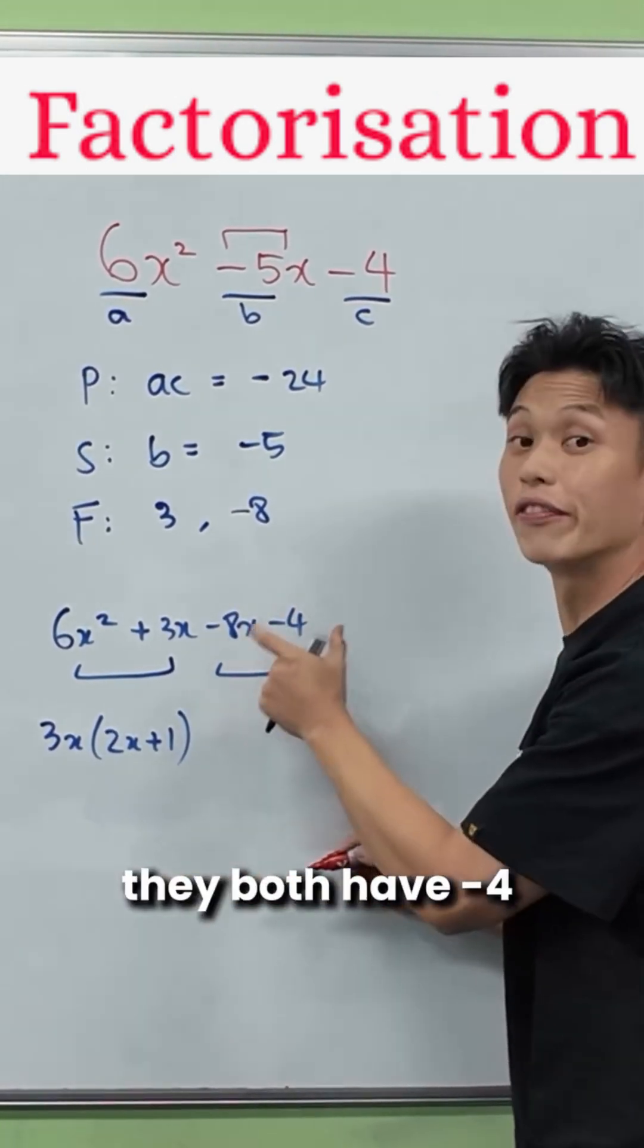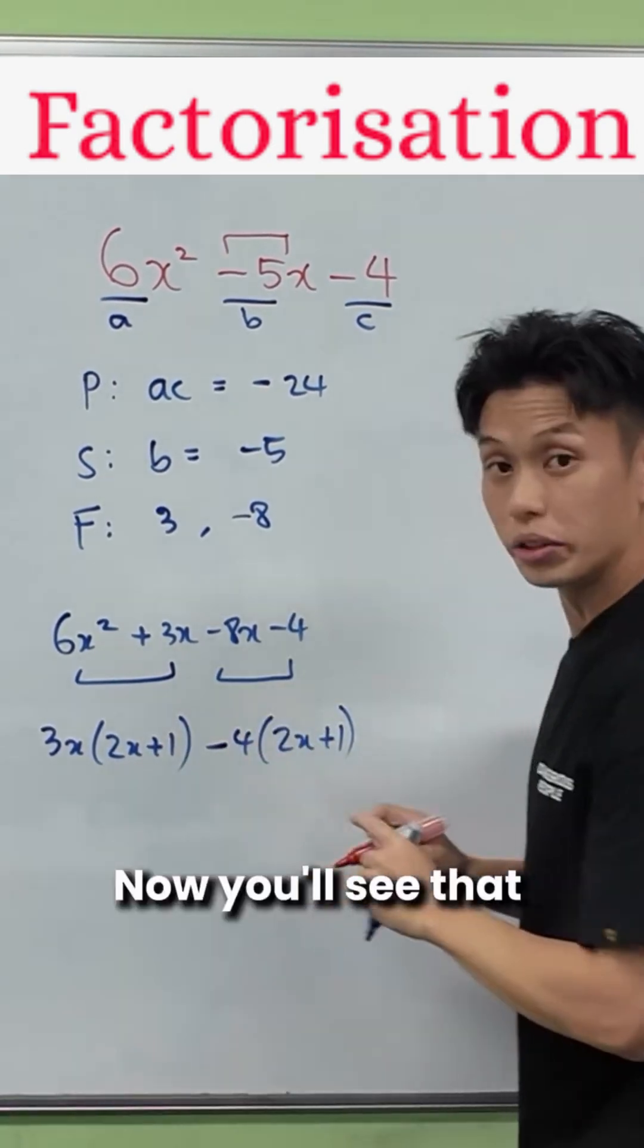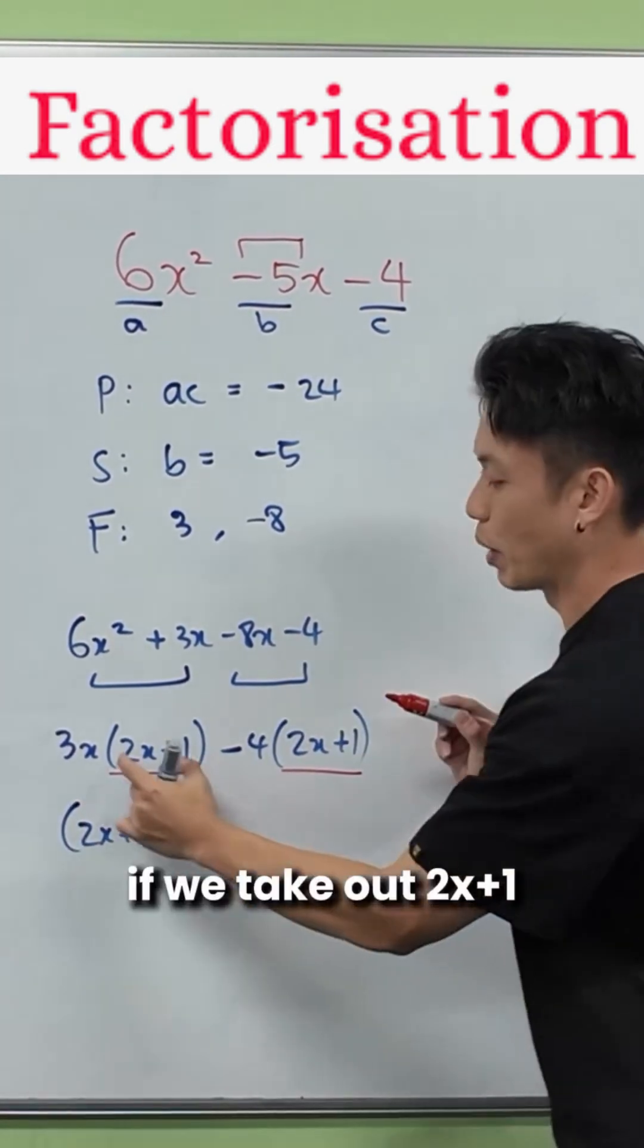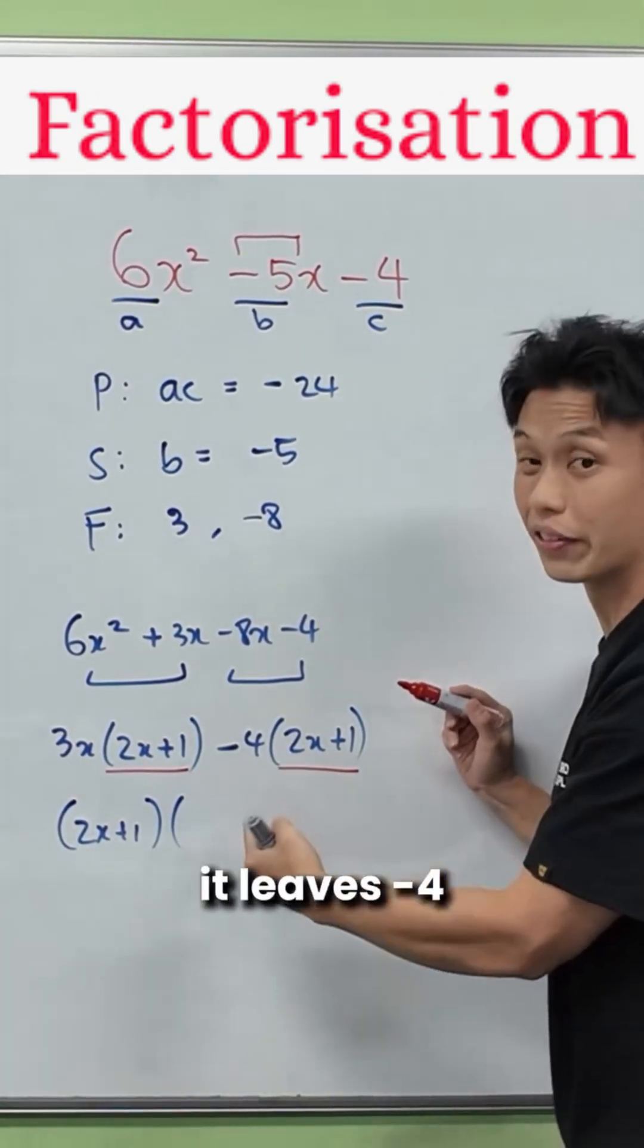And for the last two terms, they both have negative 4 in common. Now you'll see that if we take out 2x plus 1 from the left, it leaves 3x, and from the right it leaves negative 4.